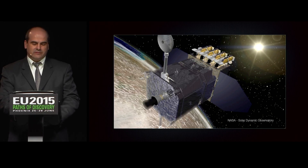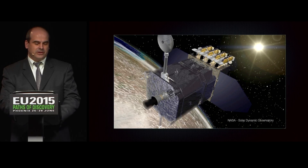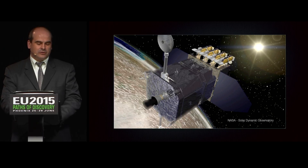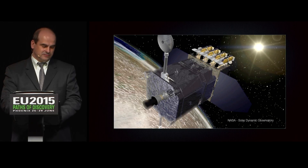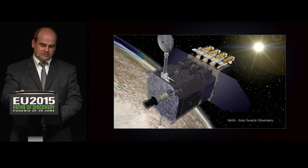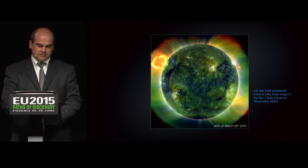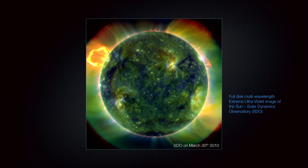But as we all know, advances in technology over the eons have helped humanity in many ways. And we now have, through the hard work of Lockheed Martin and NASA, the Solar Dynamic Observatory. What we are looking at is a full-disk, multi-wavelength, extreme ultraviolet image of the sun taken by SDO on March 30th, 2010.